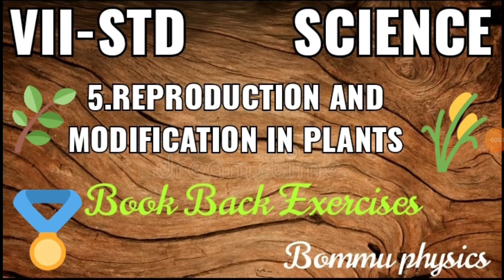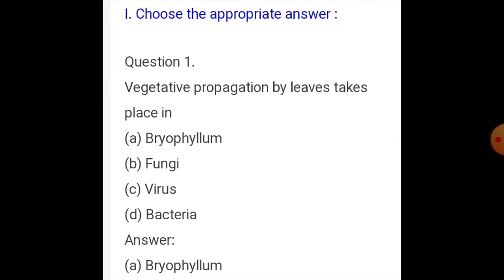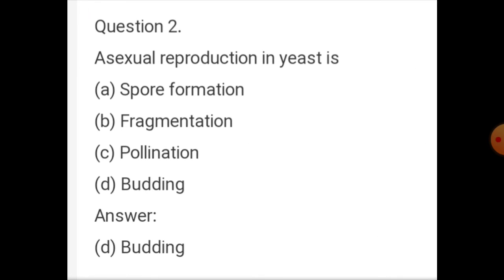Good morning students. Now we are going to discuss the seventh standard science, Unit 5: Reproduction and Modification in Plants, book back exercises. The first section is 'Choose the Appropriate Answer.' Question number one: vegetative propagation by leaves takes place in — Bryophyllum, Fungi, Virus, or Bacteria. The correct answer is Bryophyllum.